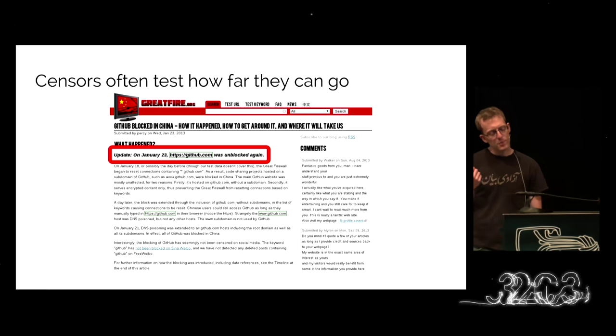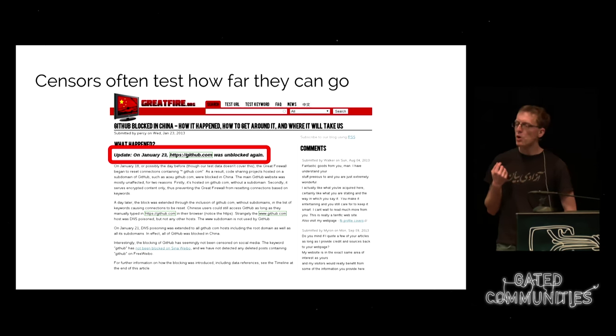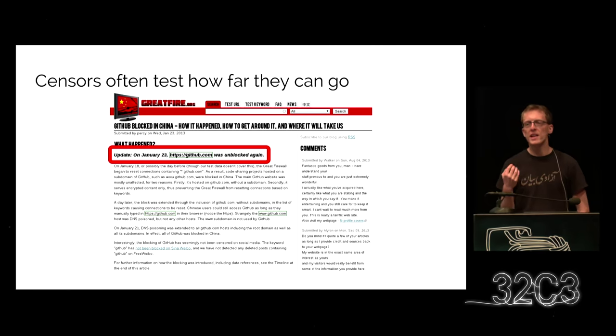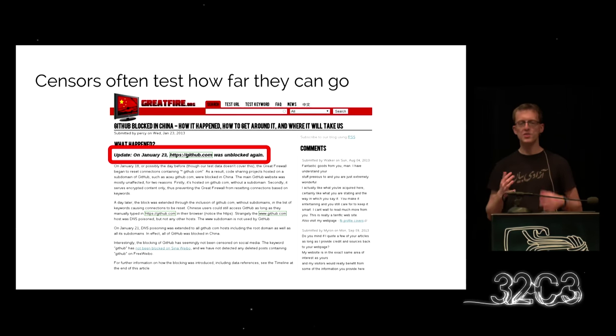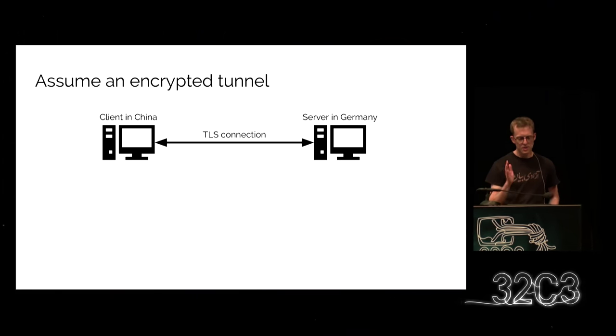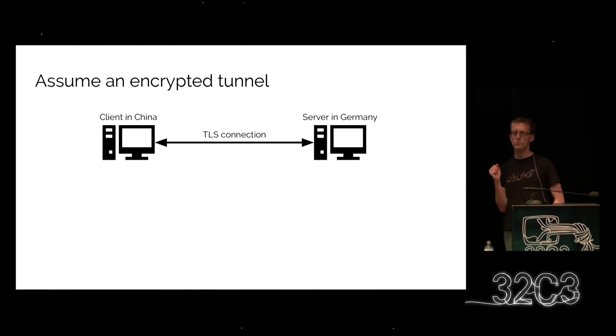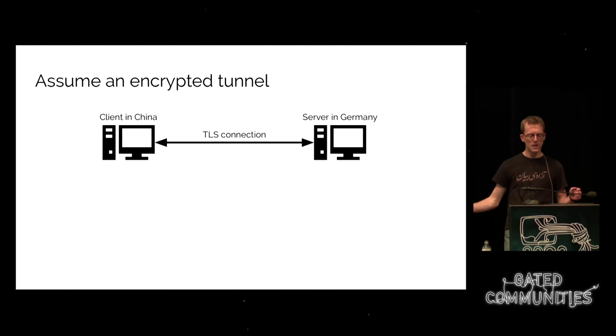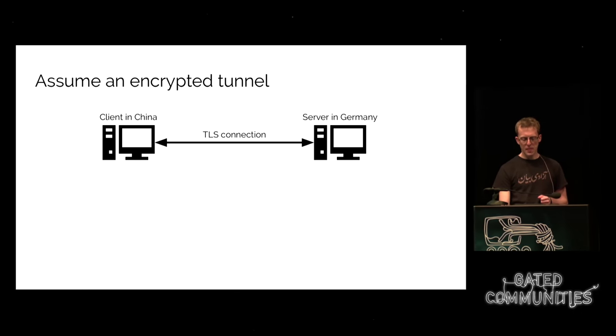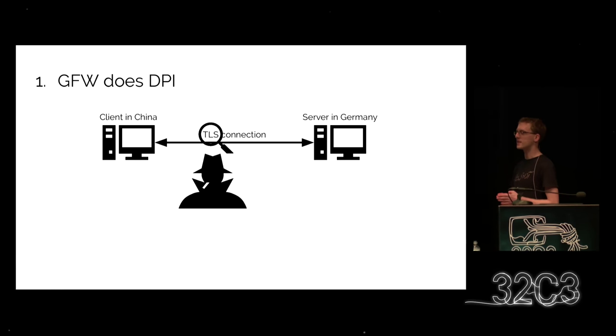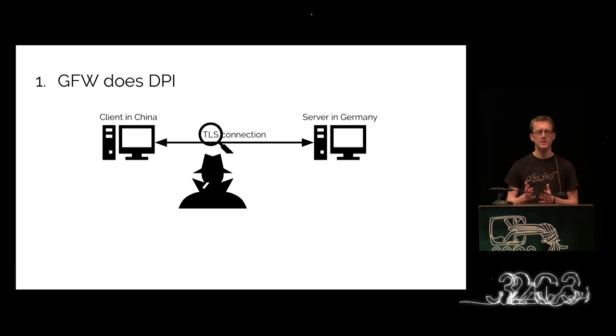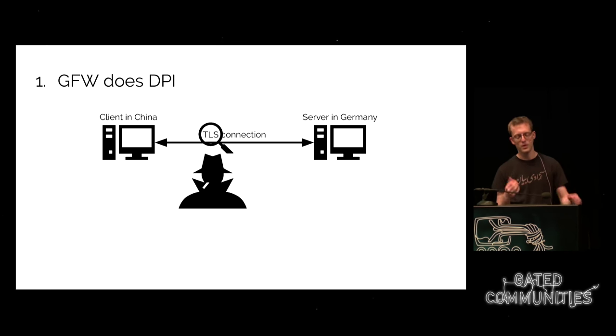The Great Firewall is designed in a smart way — they came up with a way to eliminate this uncertainty and gain certainty even when all you have is an encrypted protocol. What they came up with is called active probing. It's actually really simple to understand. Imagine a TLS connection between a client in China and a server in Germany. The Great Firewall first closely looks at the TLS connection and examines the handshake for information that could help determine what's inside.